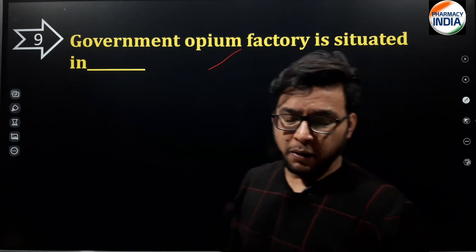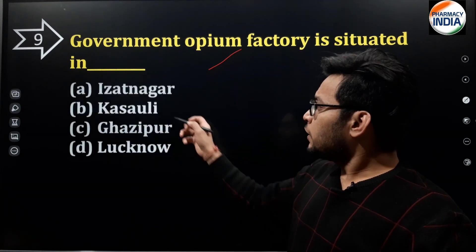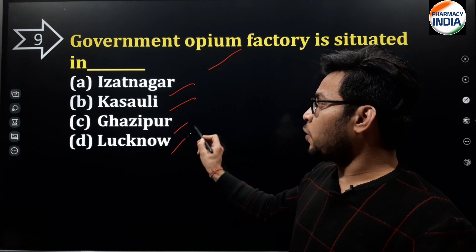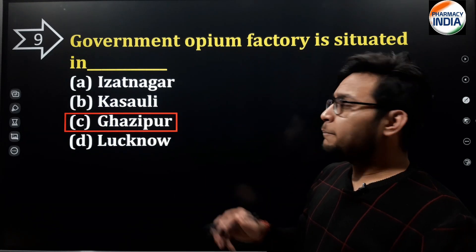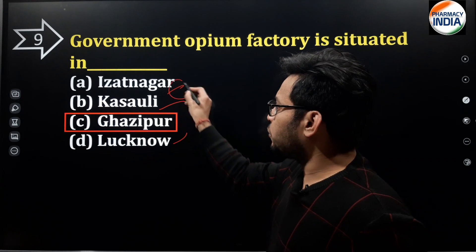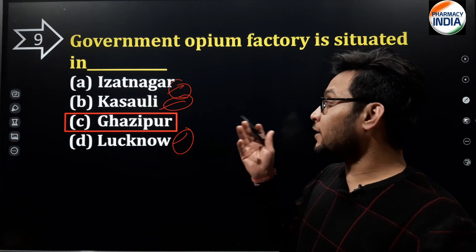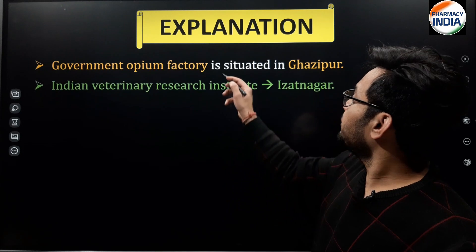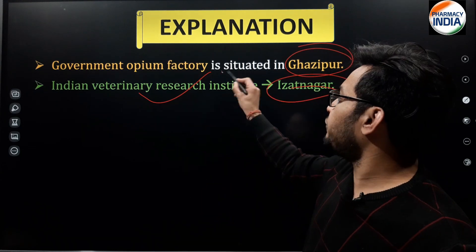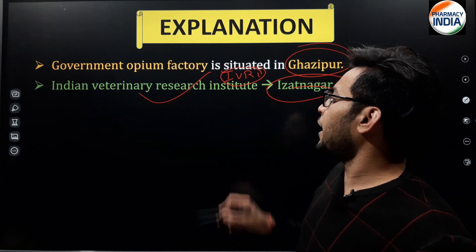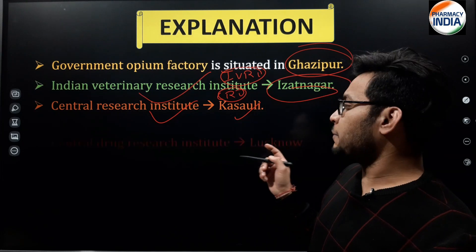Next question: the government opium factory is situated in — options are Izatnagar, Kasauli, Ghazipur, or Lucknow. The correct answer is Ghazipur. The Indian Veterinary Research Institute is in Izatnagar. The government opium factory is in Ghazipur, and other institutions are located in Lucknow and Kasauli.